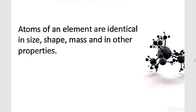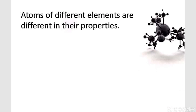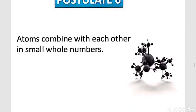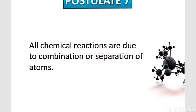Atoms of the same element are identical in size, shape, mass, and other properties. If you take hydrogen, all atoms of hydrogen will have the same properties. Atoms of different elements are different in their properties — one atom of hydrogen has one electron, one proton and no neutron, whereas one atom of oxygen has eight electrons, eight protons, and may have seven or eight neutrons. Atoms combine with each other in simple whole numbers, and all chemical reactions are due to the combination or separation of atoms.